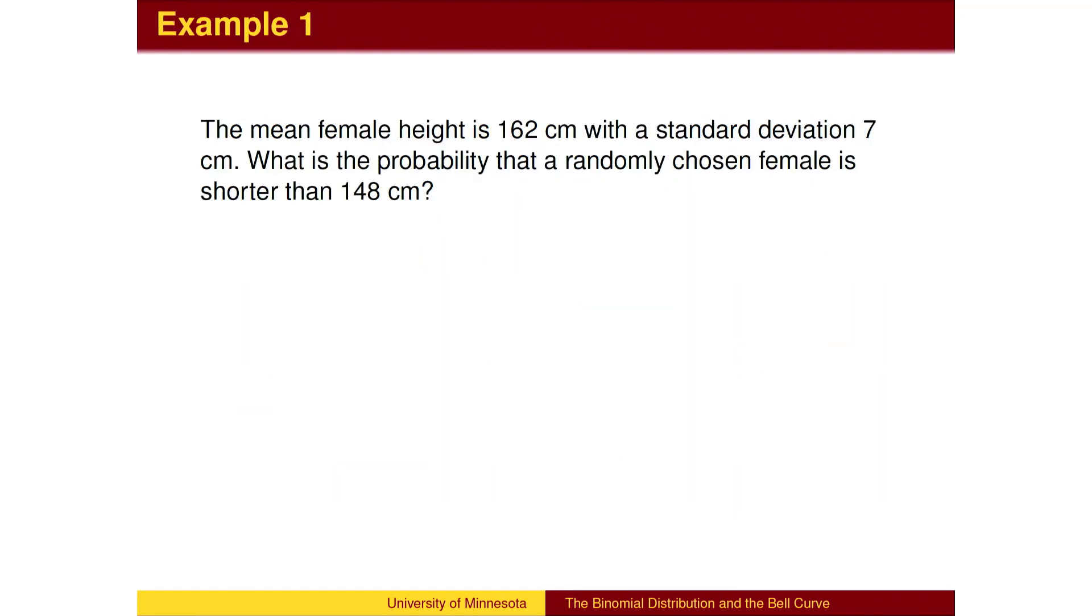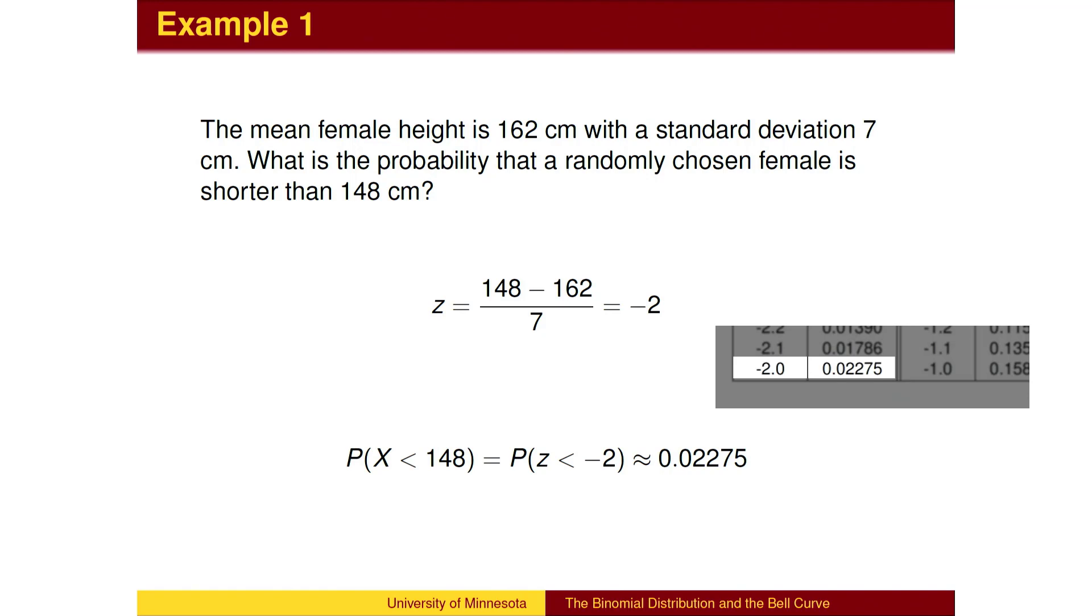Let's return to the height example. What fraction of the population is shorter than 148 centimeters? First, we compute the z-score. Then, we look up the probability in the table based on the z-score.